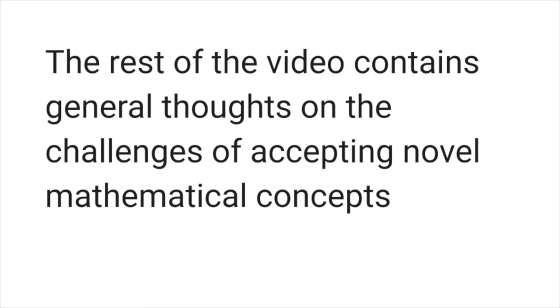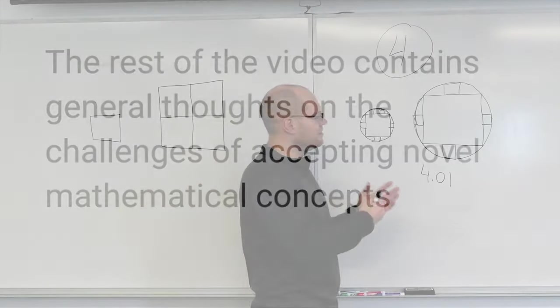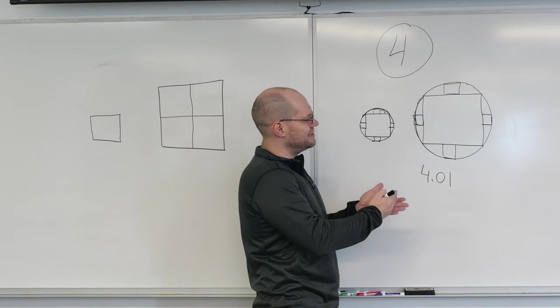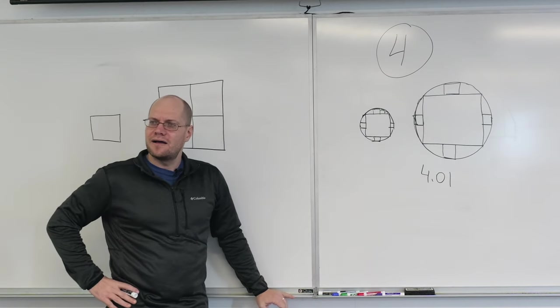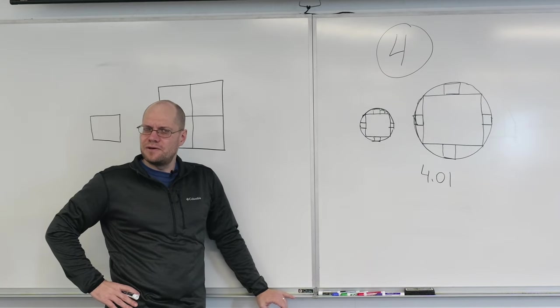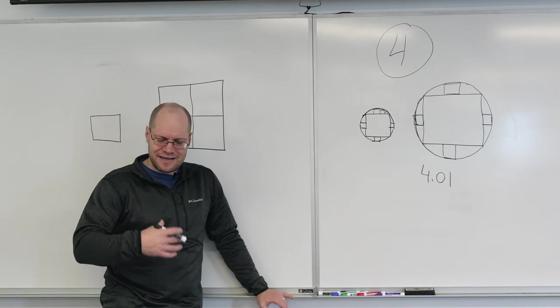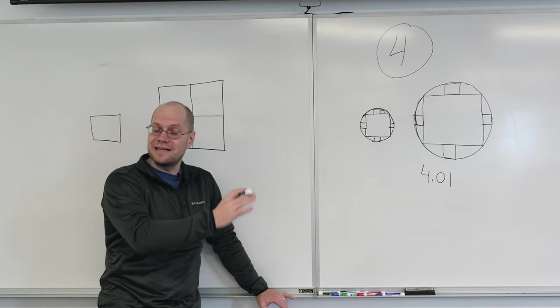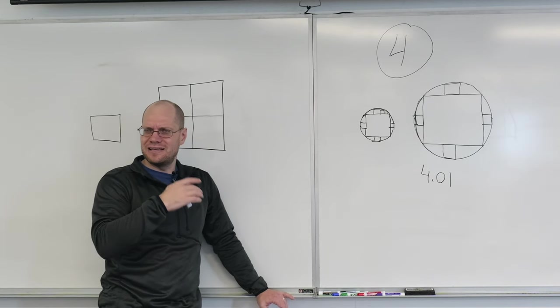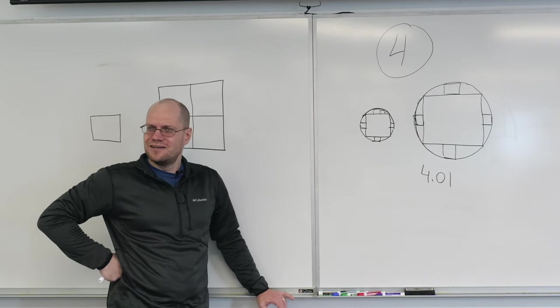And so another thing that happens is when you get comfortable with arguments like that where you can circumvent the concept of infinity and get to a nice clean answer. Then you become comfortable with types of analyses where infinity becomes part of the answer. It's kind of that intermediate state. And it's the big O notation,